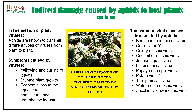Indirect damage is also caused to many plant species due to different kinds of viruses transmitted by aphids while feeding on tender plant parts. These viral diseases can also cause symptoms like yellowing and curling of leaves, stunted plant growth, reduced plant vigor, and reduced aesthetic values of many crops. Here are some common viral diseases transmitted by aphids, listed on the right side of the slide for your information.